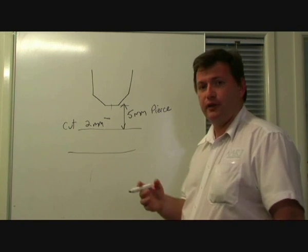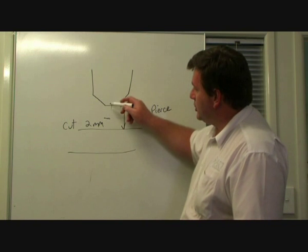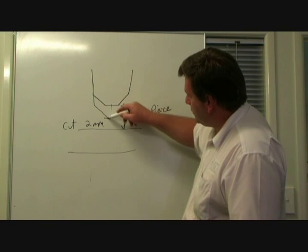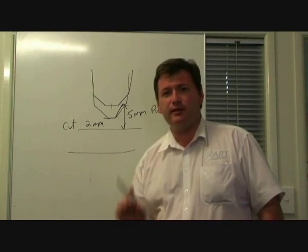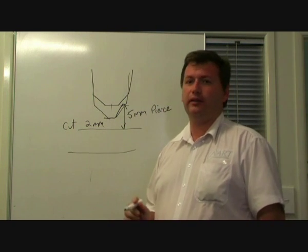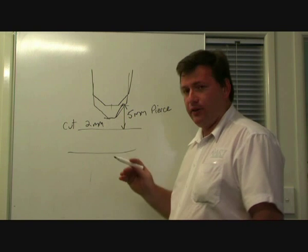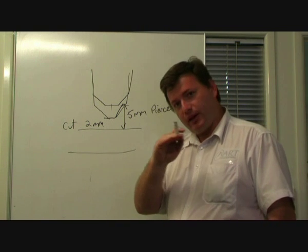After waiting for this time period, the machine lowers the torch so that it achieves the cut height setting. This is the optimum mechanical height, and this is the height that the torch will begin to start traveling at.